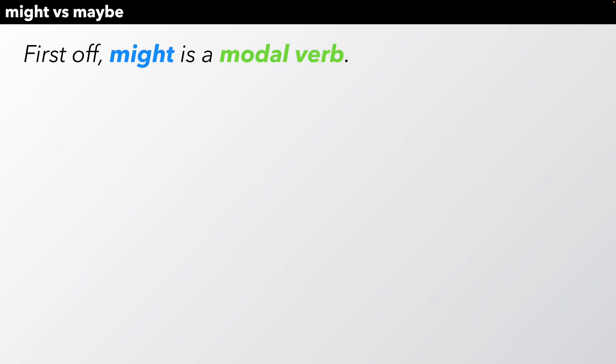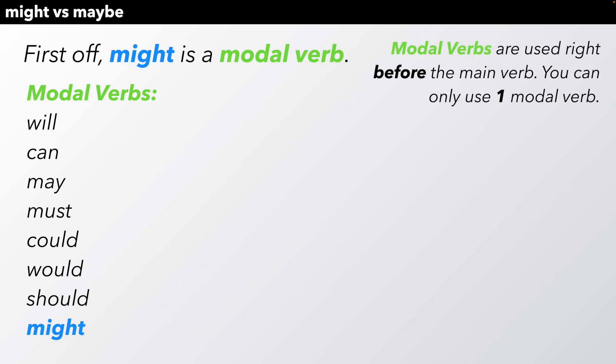First off, might is a modal verb. Here are some other common modal verbs: will, can, may, must, could, would, should, and might. Modal verbs are used right before the main verb of a sentence, and you can only use one modal verb with that main verb.